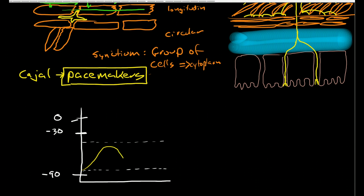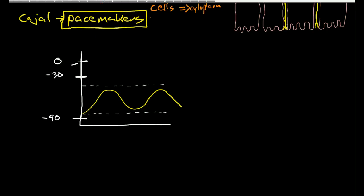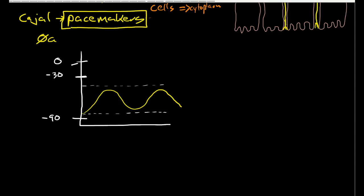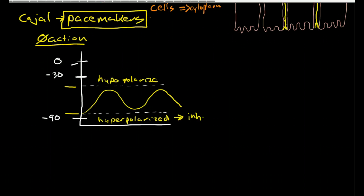Sodium leaks in, then you have potassium leak out. What's interesting is these Cajal cells do not initiate action potentials but they set up this rhythmic pattern in which the cells are hyperpolarized, that means it's going to take more to bring a cell to action potential, and hypopolarized.